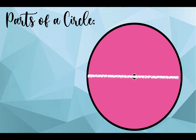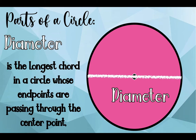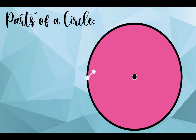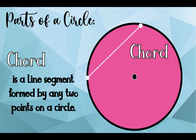And this line is what we call the diameter. Diameter is the longest chord in a circle, whose endpoints are passing through the center point. While this one is what we call chord. A chord is a line segment formed by any two points on a circle.